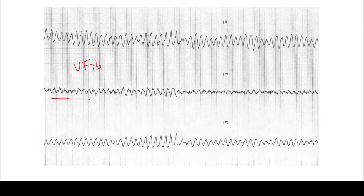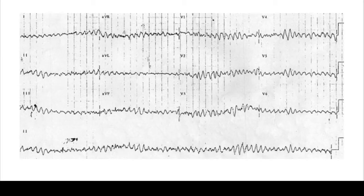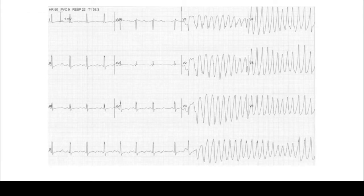Here's another example of V-fib. And then here we actually see a normal sinus rhythm degenerate into torsades de pointe — you see this kind of wide complex irregular tachycardia.